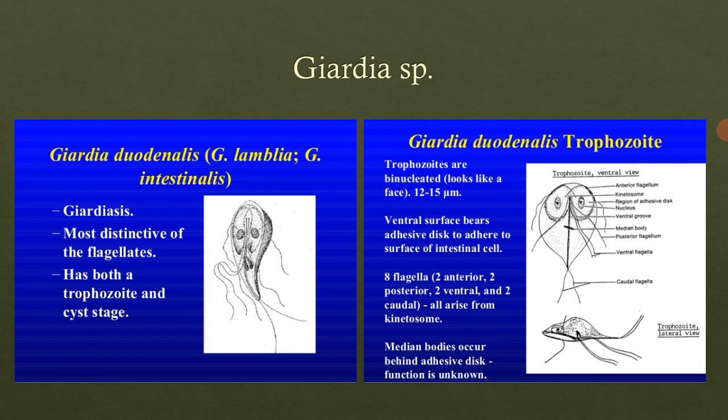We will start with the various species that are present. These include Giardia lamblia, Giardia intestinalis, and Giardia duodenalis trophozoite. Looking into the history of this protozoa, it was discovered by Antoni van Leeuwenhoek. Giardia lamblia was identified first, and later other species were discovered.